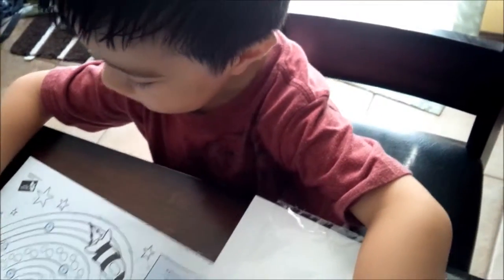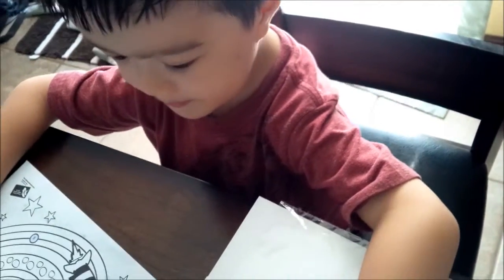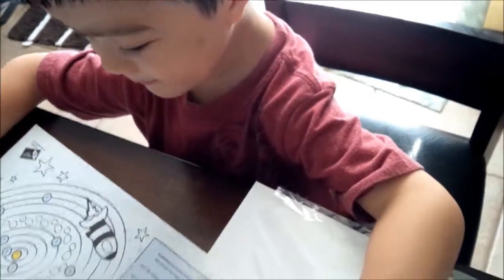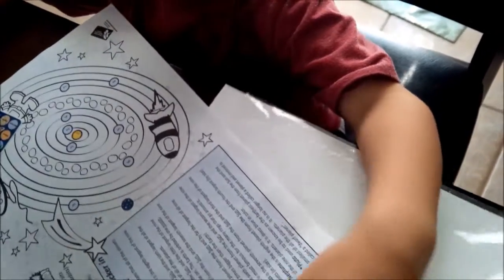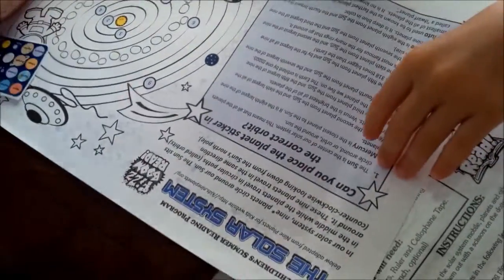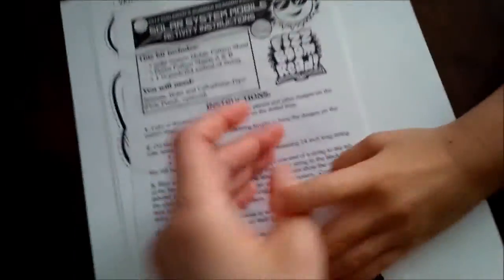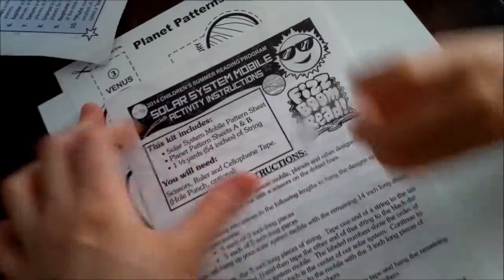What you got there? Solar system. We got this little activity kit from the library and it's about the solar system. This is what it comes with. It comes with a solar system mobile, activity instructions.